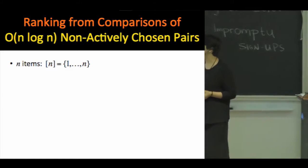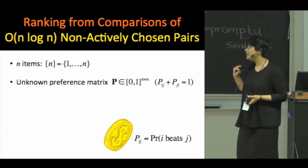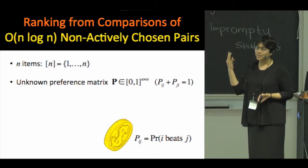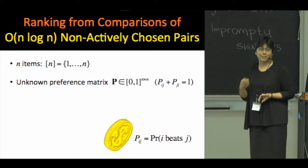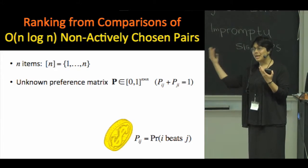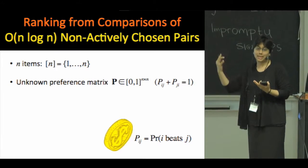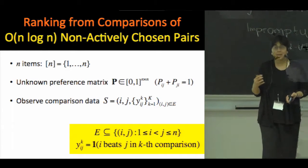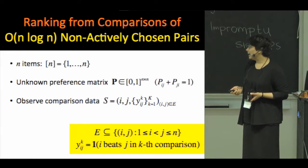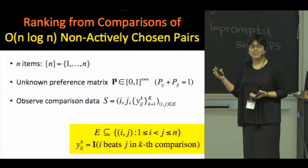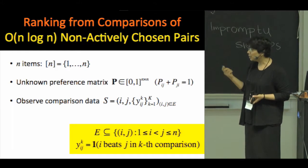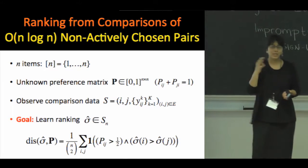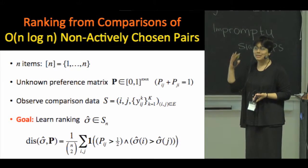To be a little more formal, we have N items. We assume a standard statistical model where there's an unknown preference matrix P, such that for every pair of items i and j, every time we compare these items, there's a coin that gets flipped with bias p_ij. So with probability p_ij we see that i beats j, and with probability 1 minus p_ij we see that j beats i. We observe some pairwise comparisons consisting of pairs i, j in some subset of pairs E. For simplicity, let's assume each of the pairs in this set is compared some capital K times. The goal is to learn a good ranking — a good permutation — where we measure quality by the fraction of pairs on which it disagrees with the underlying pairwise model P.